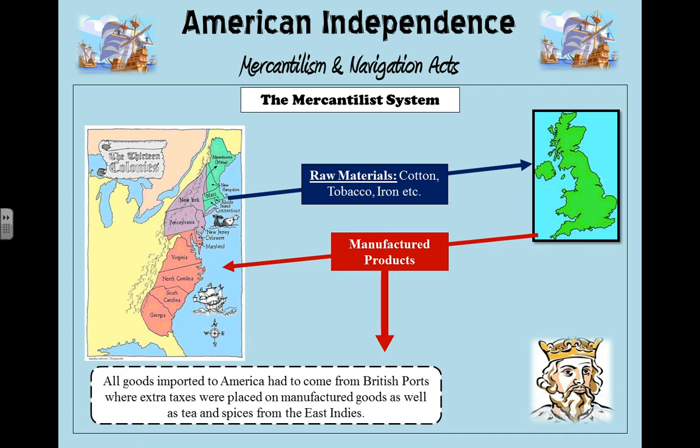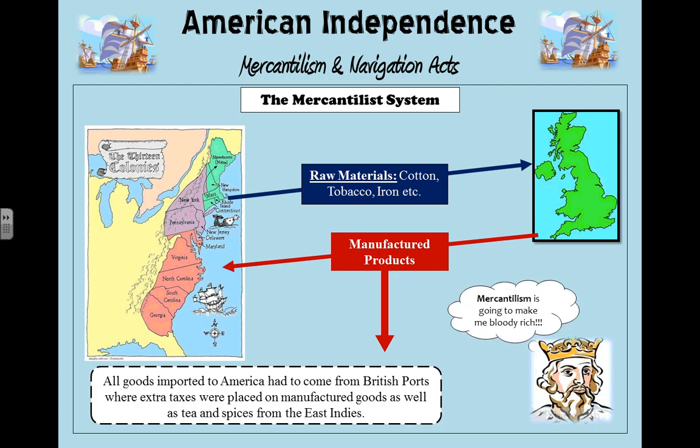All goods imported to America had to come from British ports, where extra taxes were placed on manufactured goods as well as tea and spices from the East Indies. Under this mercantilist system, manufactured goods could only come from Great Britain and were also taxed, so the colonists were paying much more money to pay off Britain's debt. The king was thinking mercantilism is going to make him — and Britain — very rich.